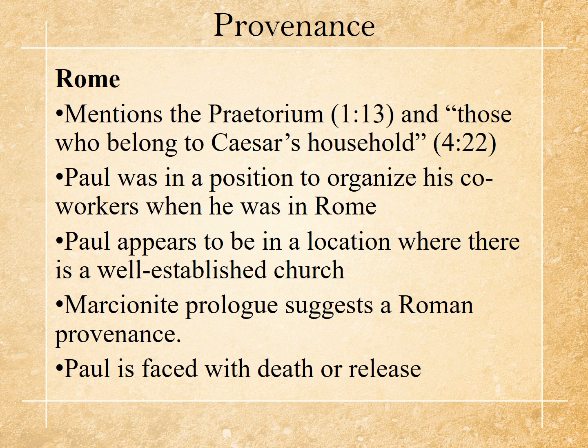Where was it written? One possibility is Rome. He mentions the Praetorium, those who are in Caesar's household — sounds like Rome. Paul was in a position to organize his co-workers when he was in Rome. He appears to be in a location where there's a well-established church, which would have been Rome. In earlier chapters, we saw where the Roman church was not founded by Paul, but probably by Jews that got saved on the day of Pentecost. The Marcionite prologue suggests it came from Rome, and Paul seems to be faced with either death or release — sounds like Rome.